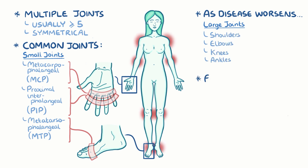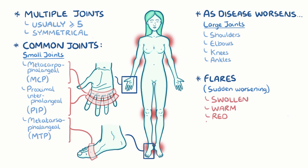During flares, or a sudden worsening of the disease, the affected joints get extremely swollen, warm, red and painful. Over time, they become stiff, especially in the morning or after being inactive for a prolonged period of time.